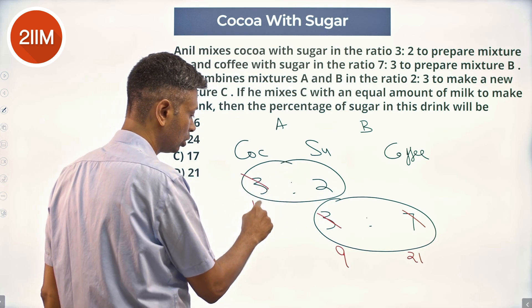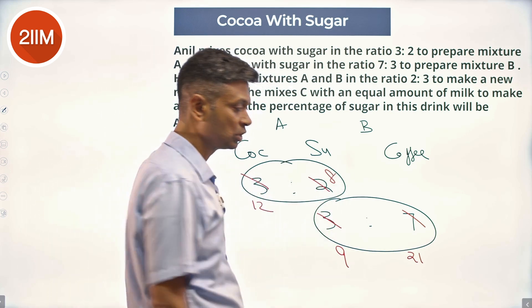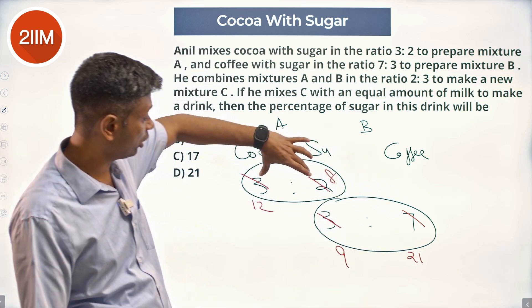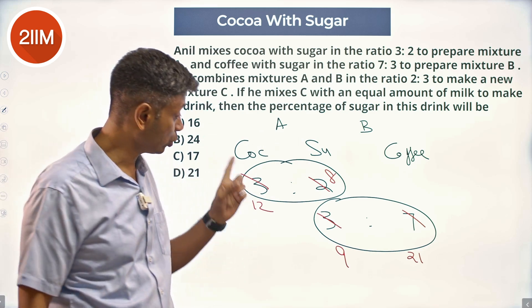So, this becomes 12 to 8. 12 plus 8 is 20. 9 plus 21 is 30. This is totally 30 units. This is totally 20 units. So, the overall mixtures in the ratio 2 to 3.